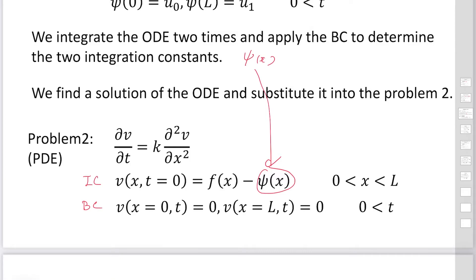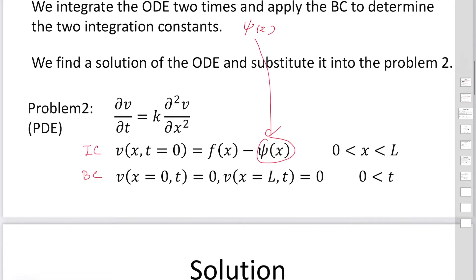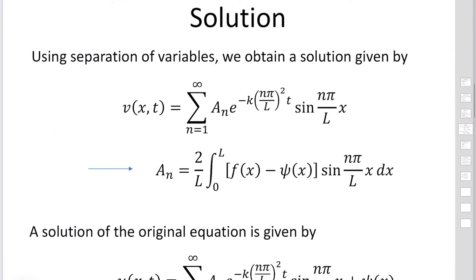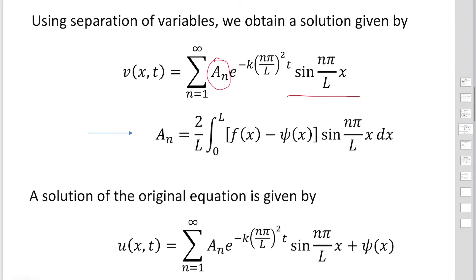We solve the partial differential equation for V using the same method as before. Under the boundary conditions, the solution for V is expressed as a sine function expansion to satisfy the homogeneous boundary conditions. We then apply the initial condition to find the coefficients A sub n, which are expressed in terms of the initial value F(x) minus Pc(x).